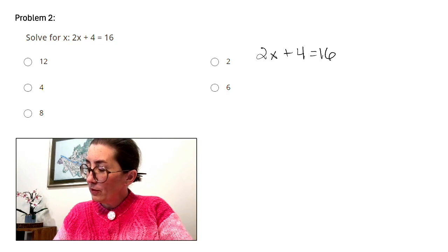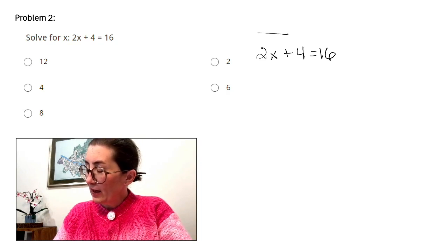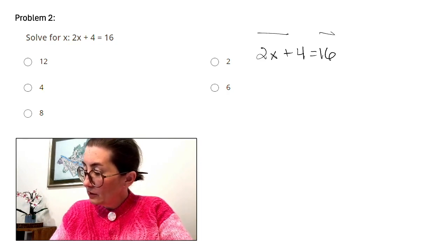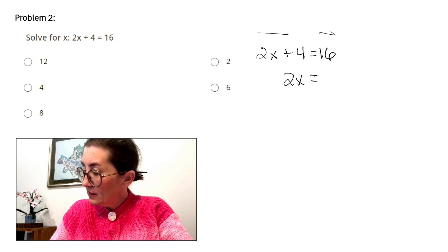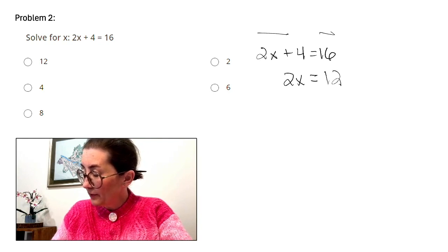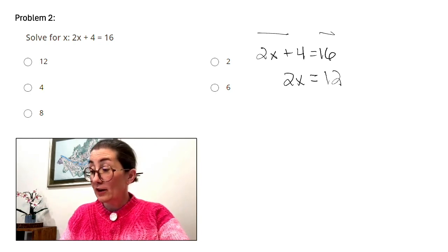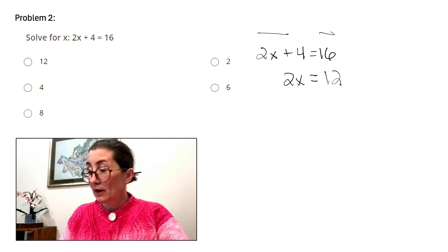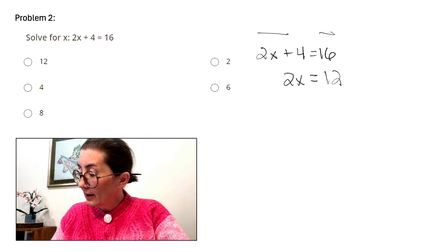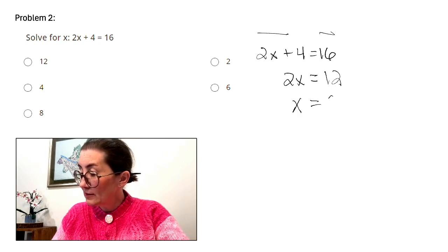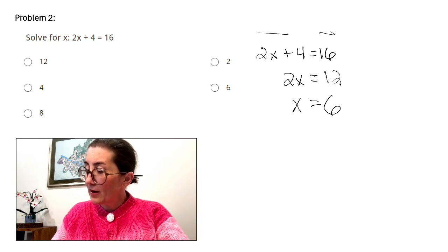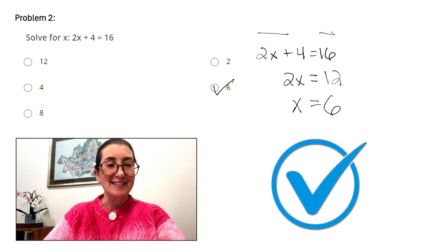So, we're taking away 4 from this side, and we have to take away 4 from this side. So, 2x is equal to 16 minus 4 is 12. Now, we're going to divide each side by 2. x equals 12 divided by 2 is 6. So, our answer is 6.